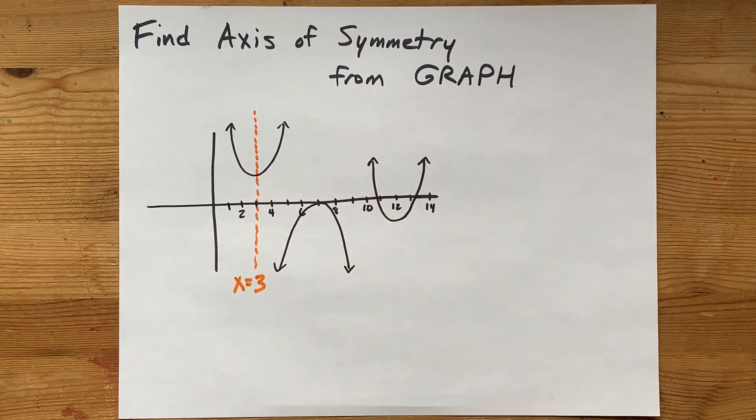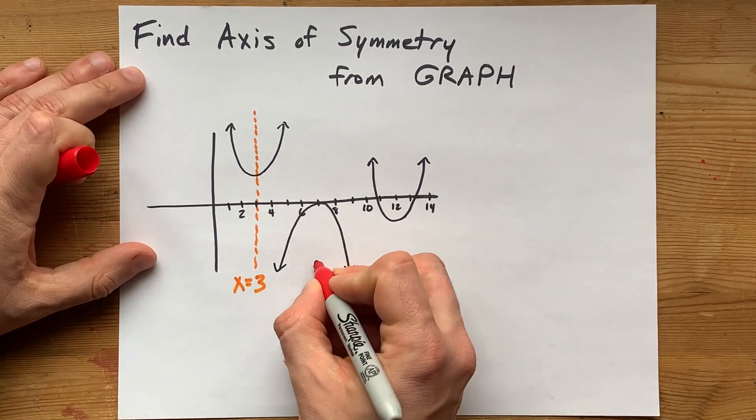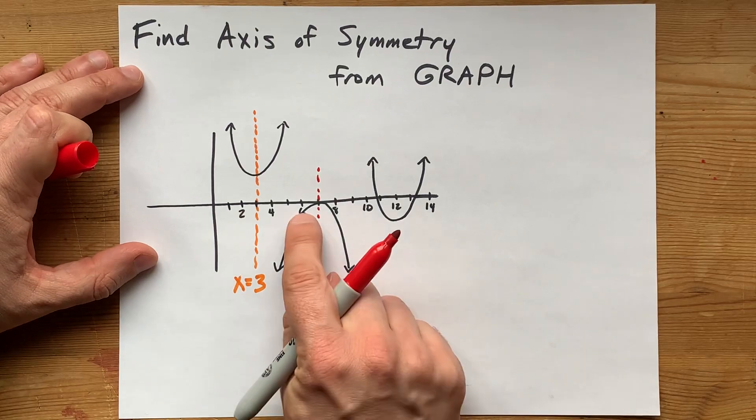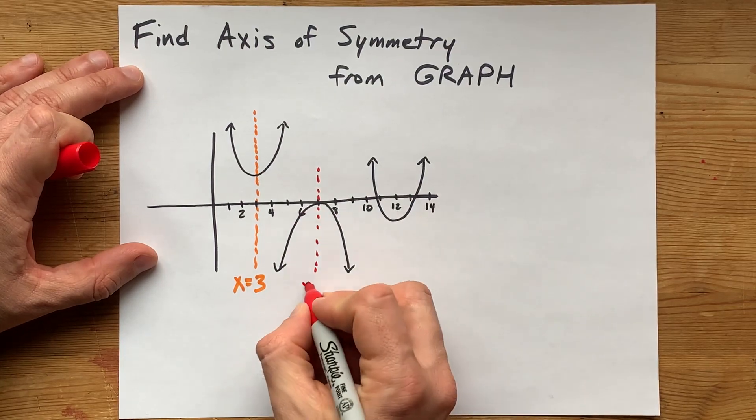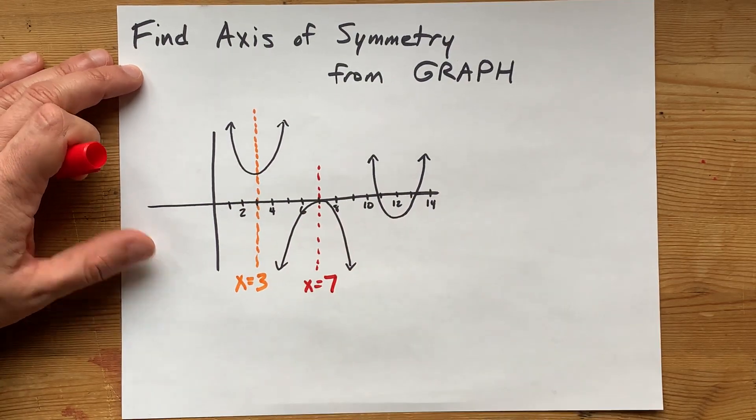Let's do this five more times together. How do you cut this parabola in half? Well, it goes straight through there. That's between 6 and 8, so my axis of symmetry is x equals 7.